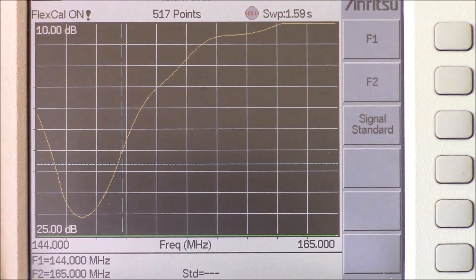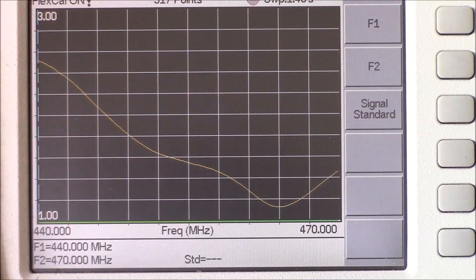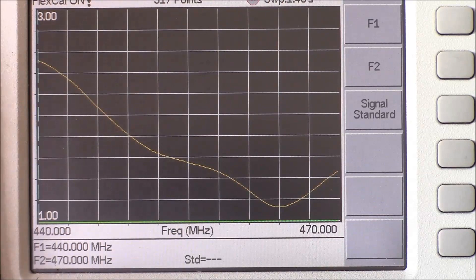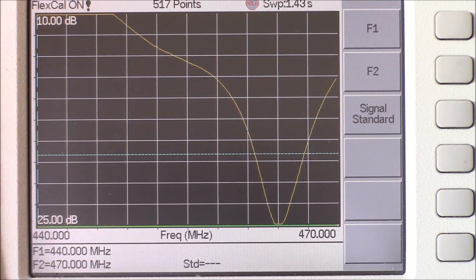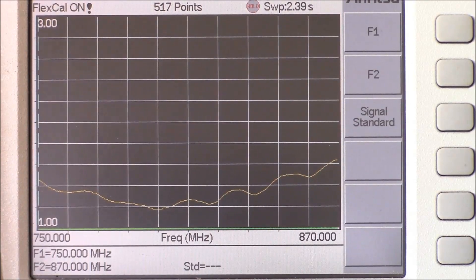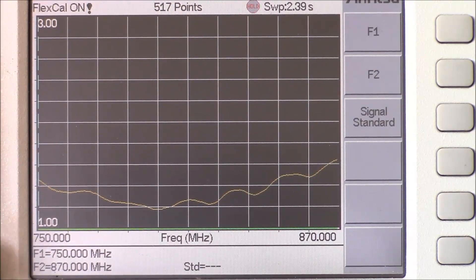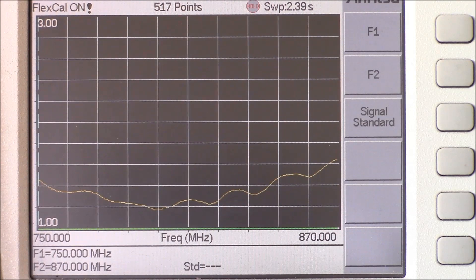Here's our return loss of our VHF quarter-wave antenna. This is our UHF collinear antenna, and how it performs. Here is the return loss of that UHF collinear antenna. And here is our 700-800 MHz quarter-wave antenna. We're sweeping from 750 MHz to 870 MHz. And here is our return loss for our 800 MHz quarter-wave.